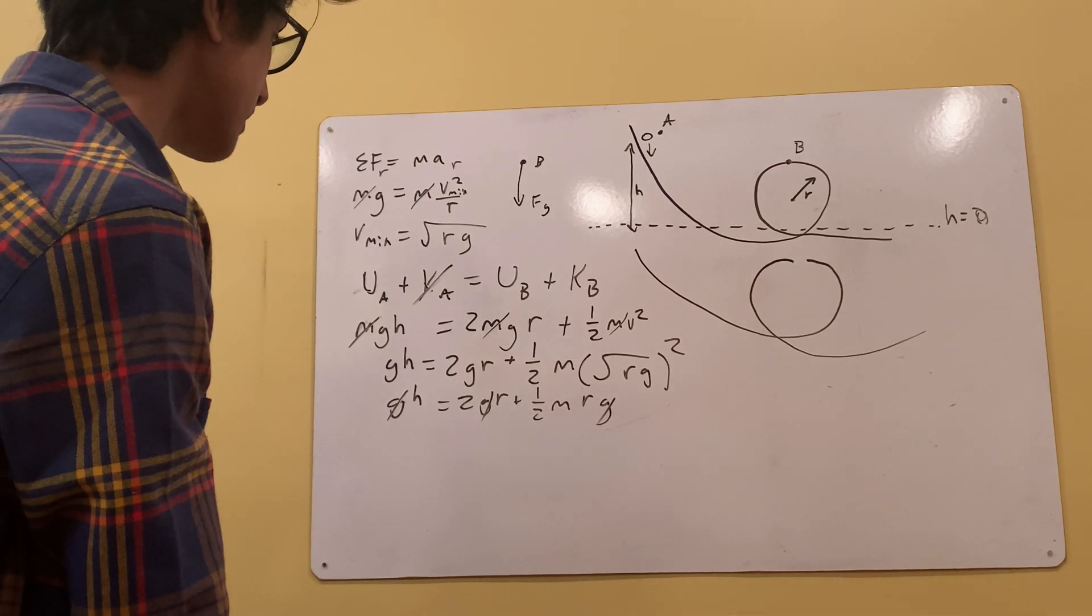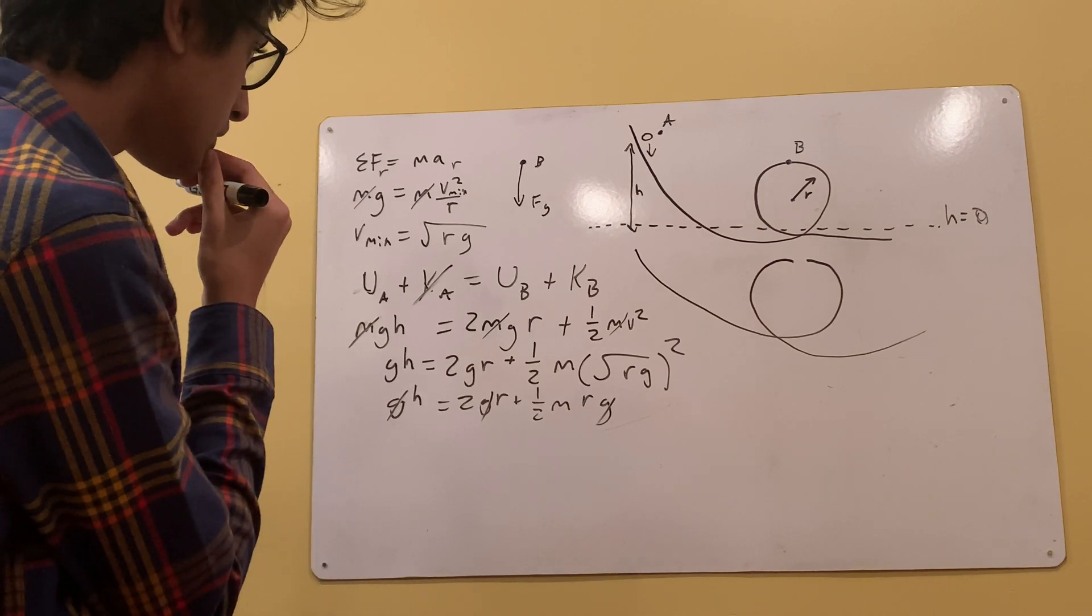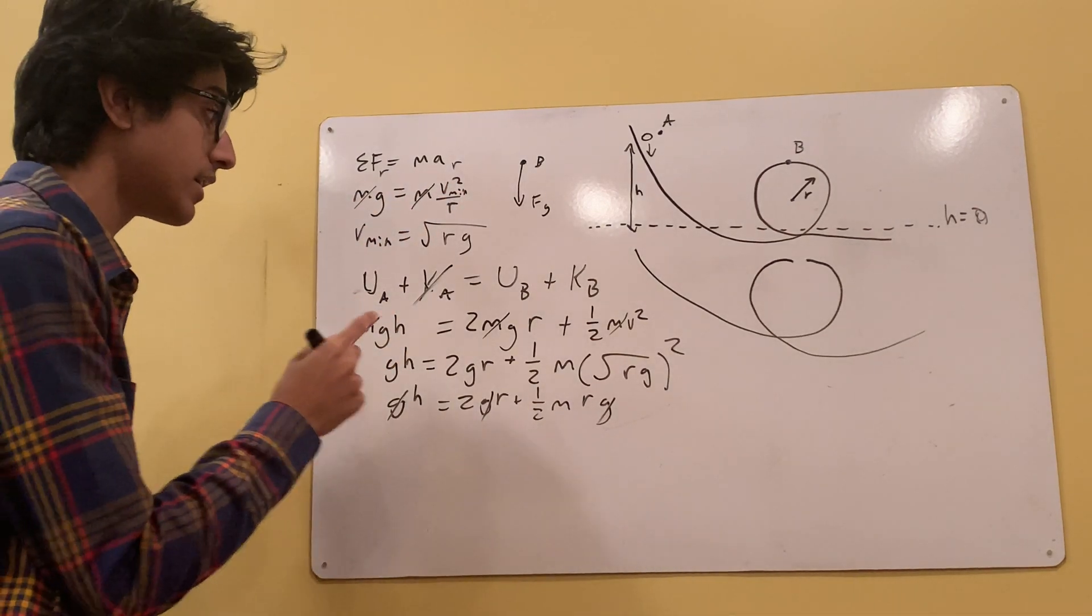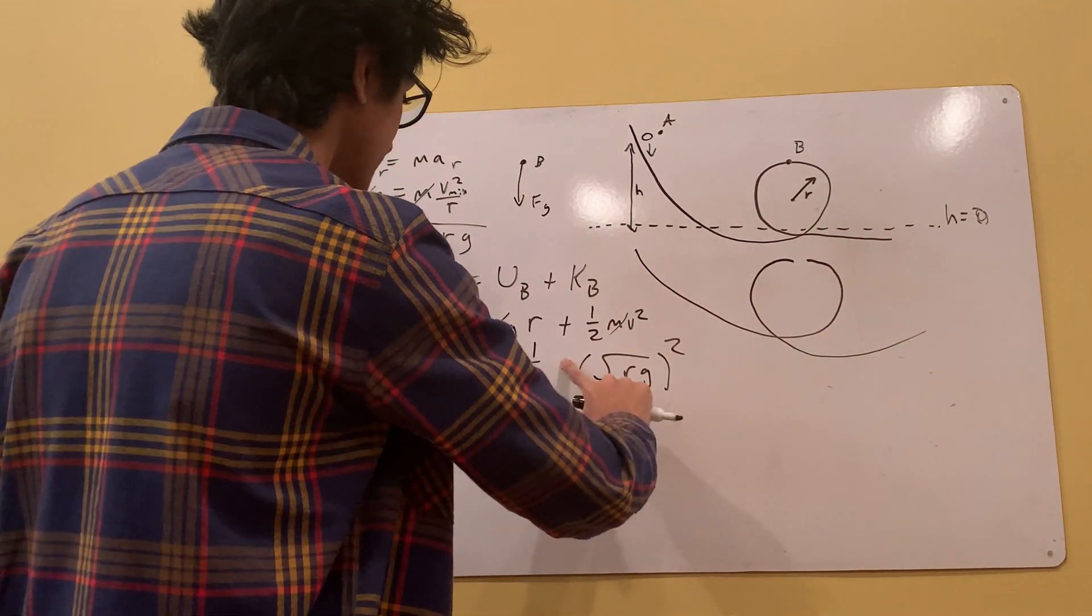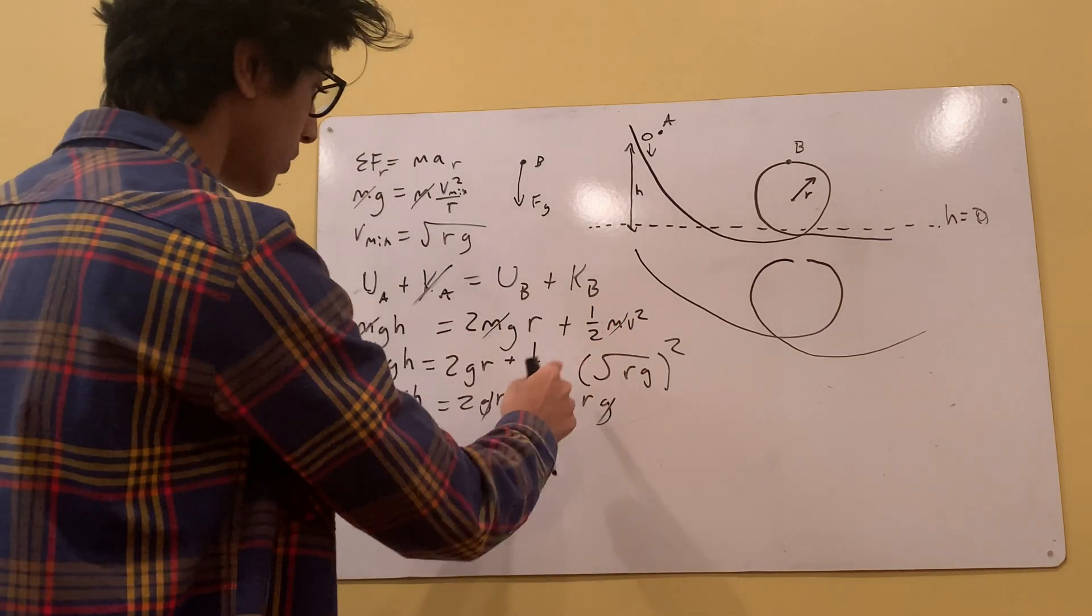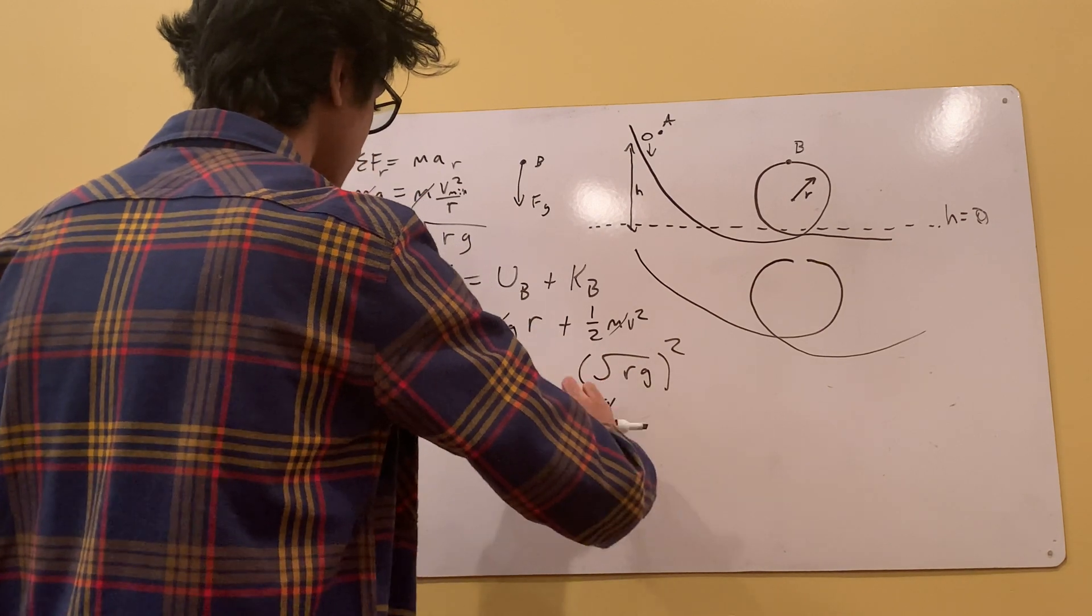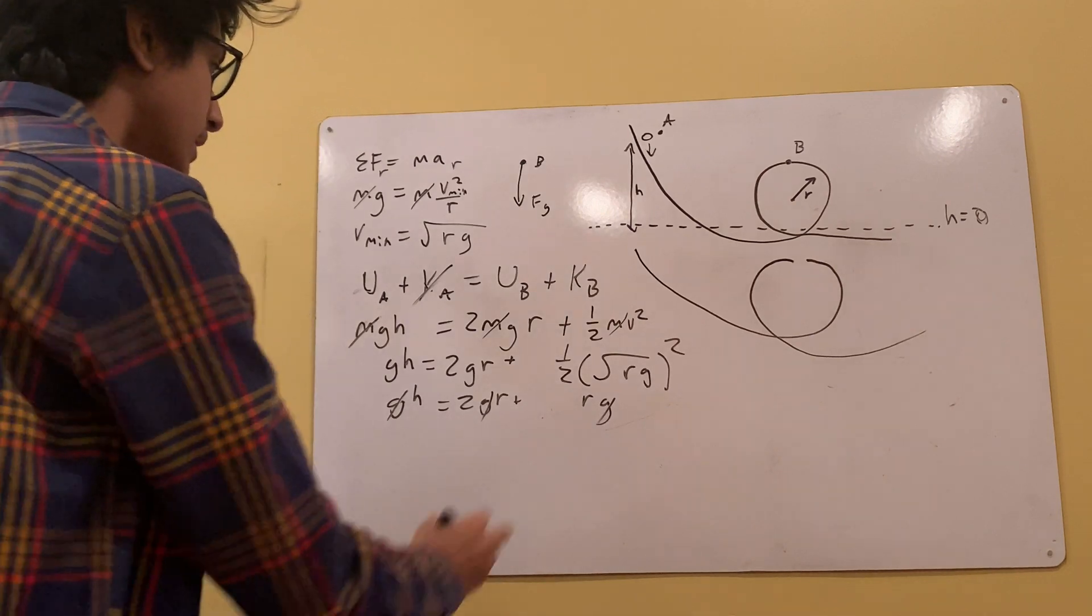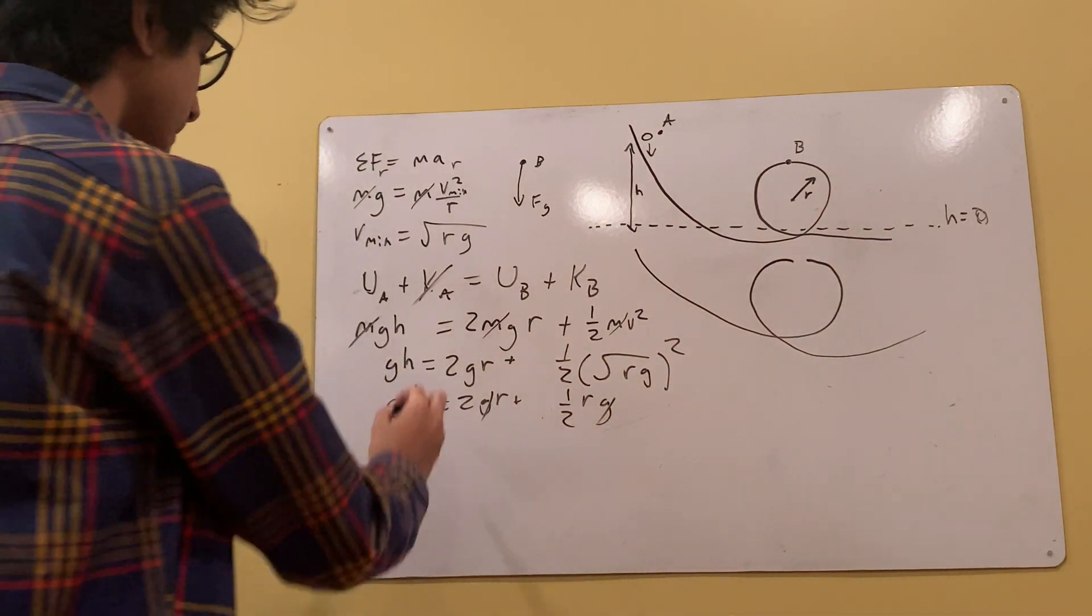Oh, I found a mistake right here. I canceled that m out, and I brought it down anyway. That is a mistake. There's no m over there, because we canceled it out in this step. So I carried it down for no reason. Let me... So it's 1 half times that, and then 1 half times that. So we cancel all the G's out. We get H is equal to 2R plus 1 half R. So we can just simplify this into H is equal to 5 over 2R.